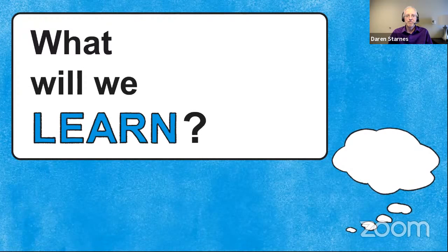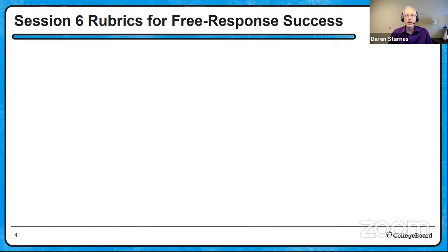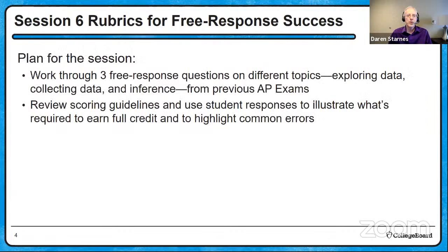Today we're going to learn about becoming successful on the free response questions using rubrics or scoring guidelines. The plan for this session: we'll work through three free response questions from previous AP exams on different topics — exploring data, collecting data, and inference. These are all from previous AP exams and highlight really important concepts and skills. Along the way, we'll review the scoring guidelines, which I'll sometimes call rubrics, and use student responses to illustrate what's required to earn full credit, but also to highlight some common errors.